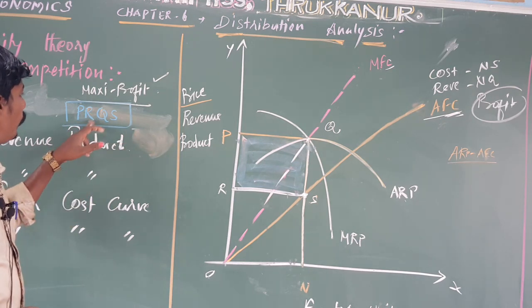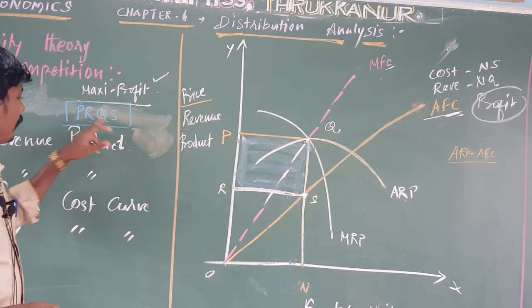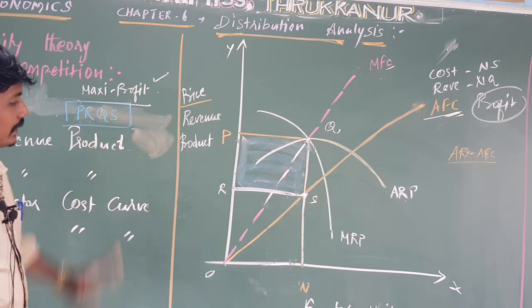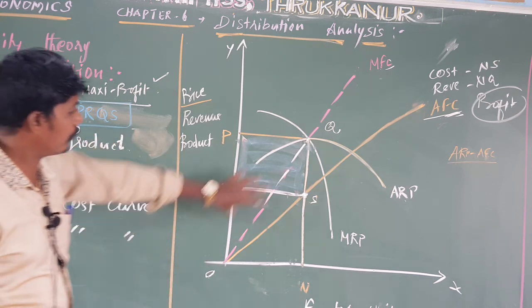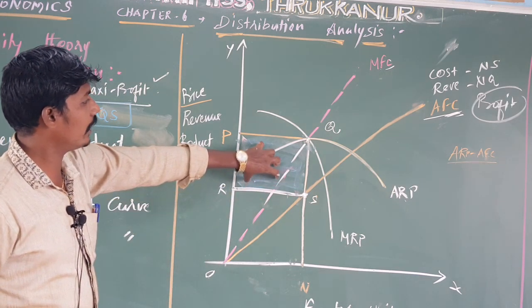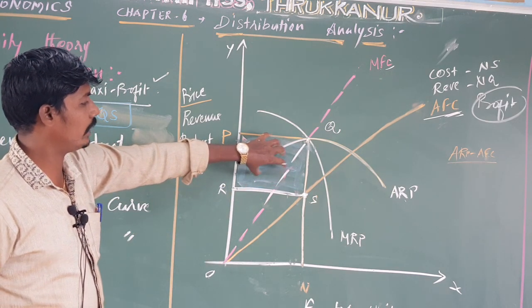The shaded area PRQS represents the maximum profit in this diagram.